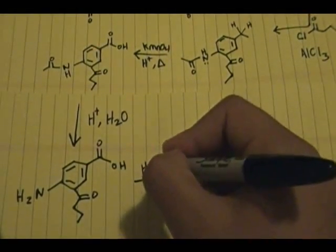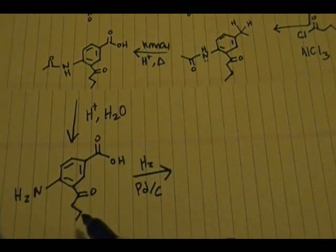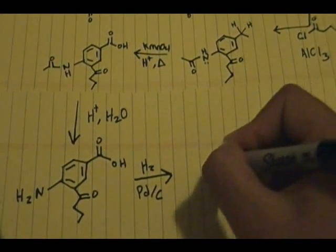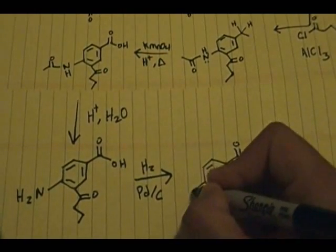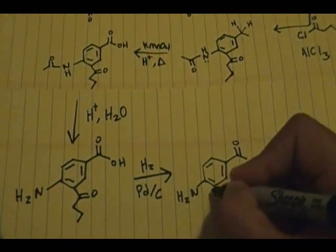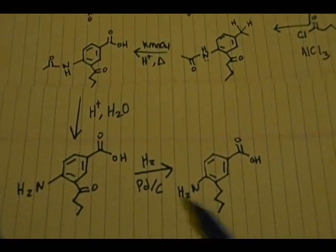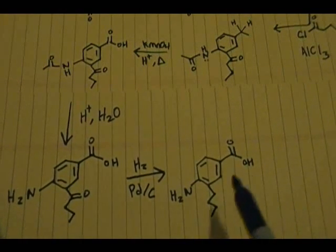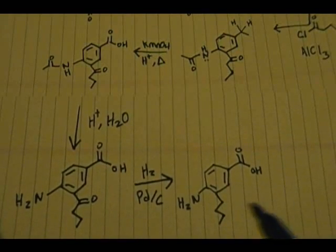For the final step, I used H2 with palladium-carbon catalyst again to deoxygenate the ketone and give us our four-carbon (butyl) chain. The final product has the carboxylic acid, the NH2 group, and the butyl alkyl group. Some might wonder whether this H2/Pd-C step also removes the carboxylic acid's C=O — but it doesn't, because H2/Pd-C only deoxygenates ketones or aldehydes, not carboxylic acids.